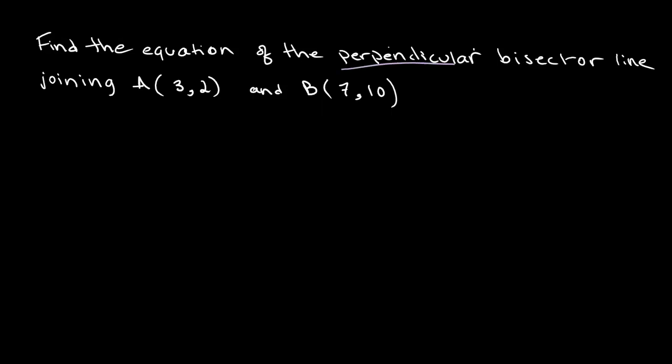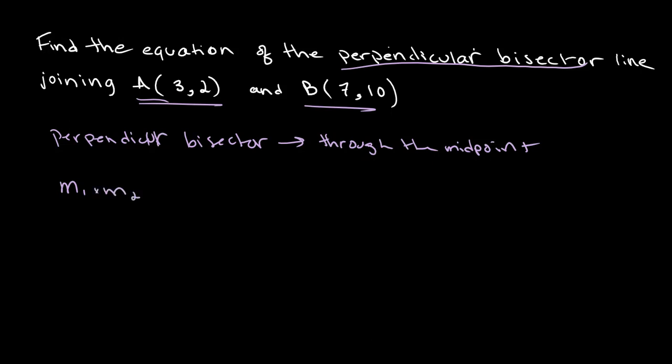We know that the perpendicular bisector runs through the midpoint and is perpendicular to the line. That means if you multiply the two gradients, so if we call the gradient of AB m1 and the gradient of the bisector m2, then we will get a value of negative 1.